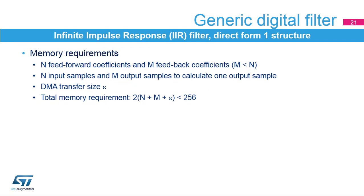The IIR requires N feed-forward coefficients and M feedback coefficients, M being lower than N. The input buffer size should be N plus epsilon, where epsilon is the number of data in a DMA burst. The output buffer size should be M plus epsilon.